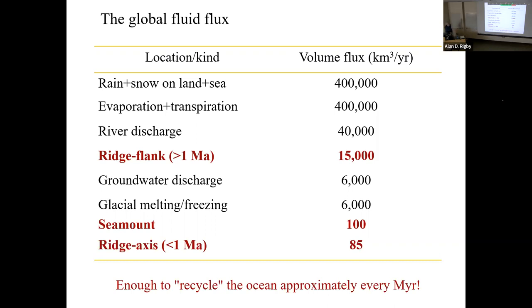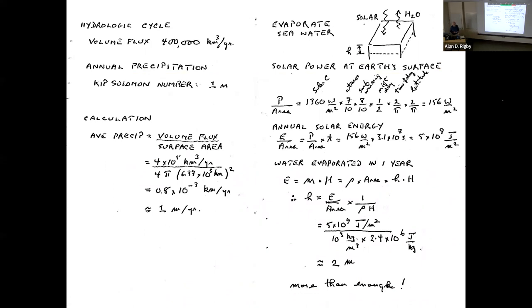If we put that together with fluid fluxes elsewhere, we've got the ridge flank at 15,000, seamounts about 100, and smokers on the ridge are very impressive but smaller in volume. These are substantial fluid fluxes. They're a small part of what we call the hydrologic cycle, which is rain, snow, and land, but substantial in their own right. Now I had an interesting idea. 400,000 cubic kilometers a year doesn't mean anything to me. So I thought I needed to know what's the average rainfall in a year? In the 1980s, I did the next best thing. I found a tame hydrologist and said, hey Kip, what's the average rainfall in a year?